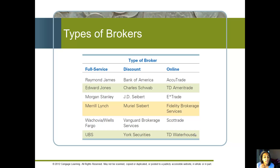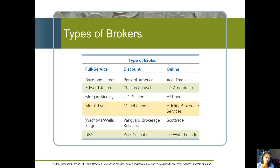We talked about different types of brokers — full service, discount, and online. Here are some examples. If you think you know which category you want, here are some names to check out. You've probably heard more of the online broker names because they do a lot of advertising. Most small retail investors will go with an online broker because it's quick, easy, and very inexpensive. But if you need more guidance and hand-holding, you might want someone in one of the other categories.